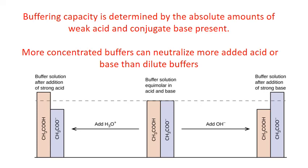Buffering capacity is ultimately determined by the absolute amounts of weak acid and conjugate base present. More concentrated buffers can neutralize more added acid or base than a dilute buffer. This is just because there's more of the weak acid or the conjugate base to actually react with whatever is added.